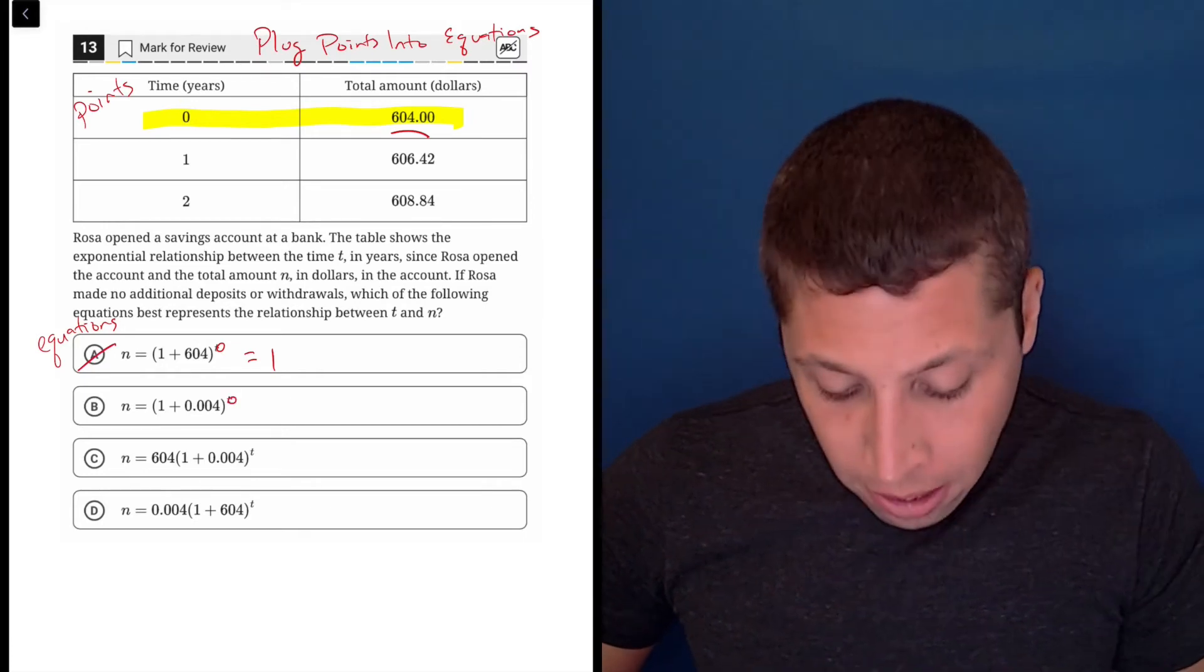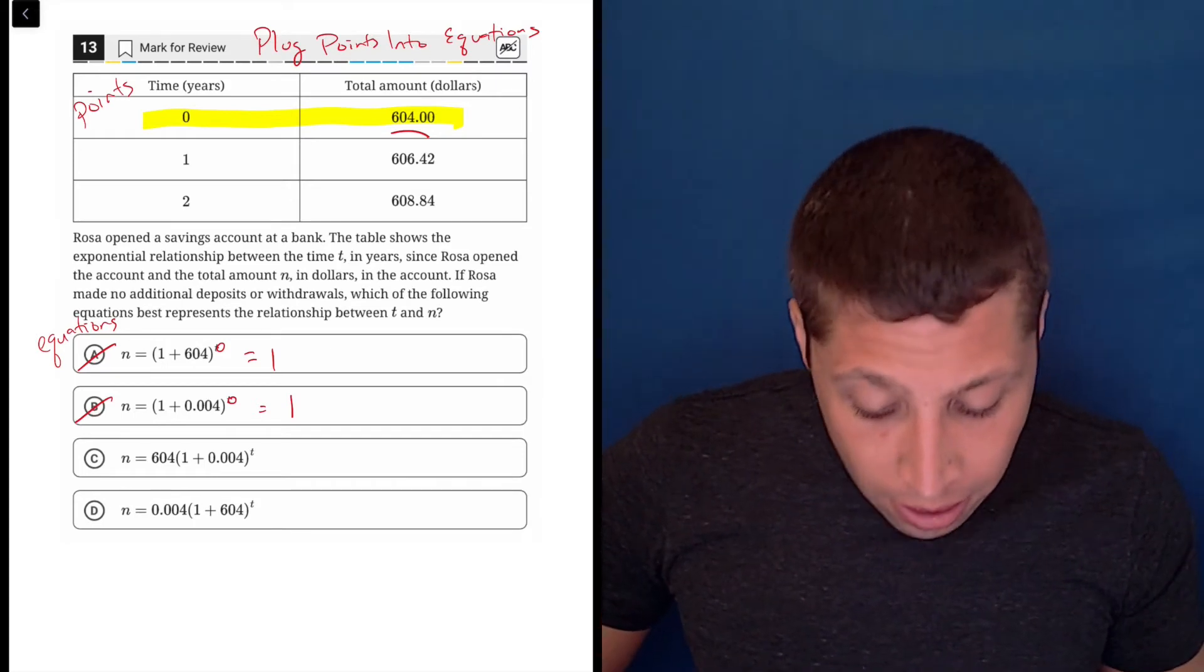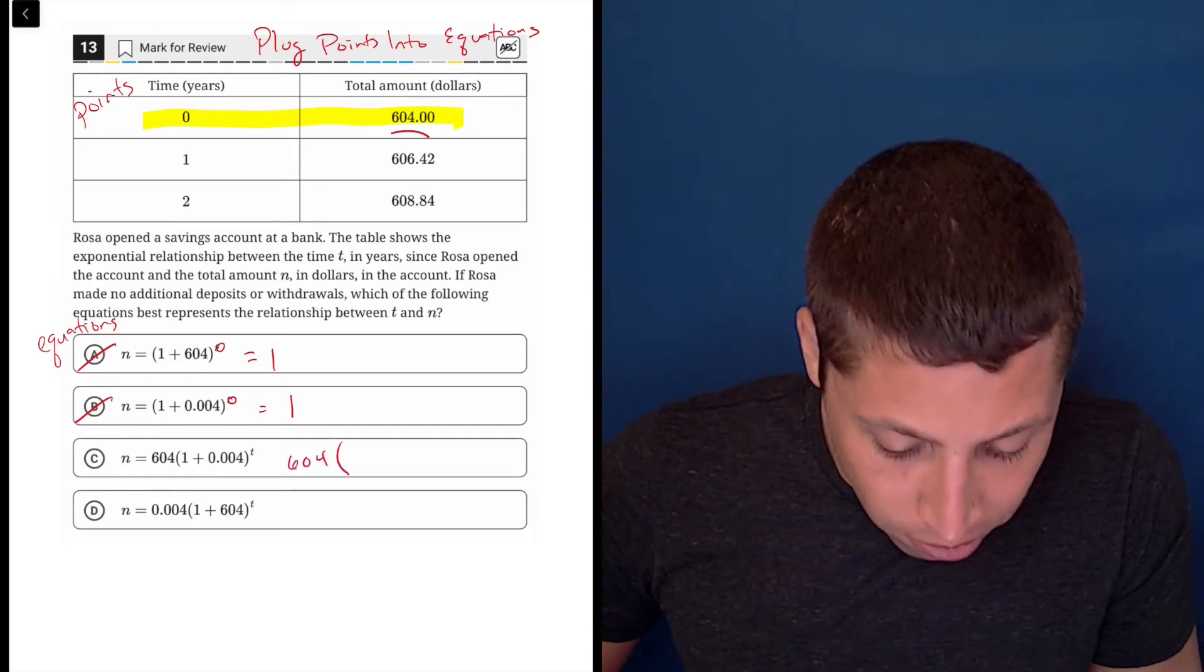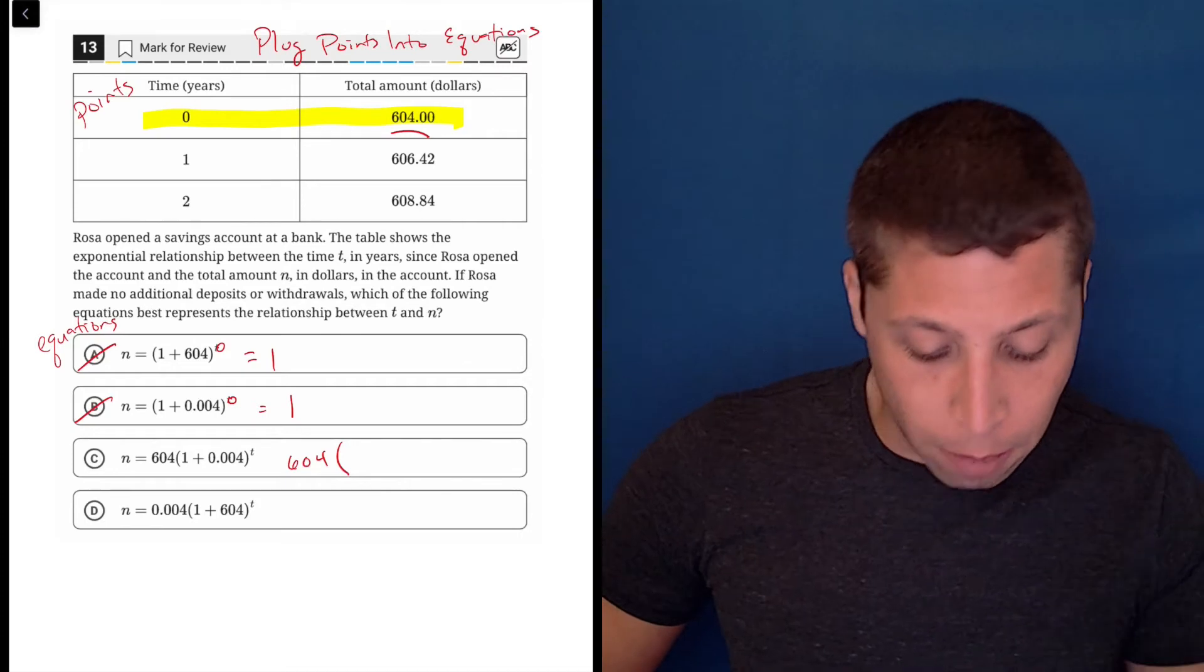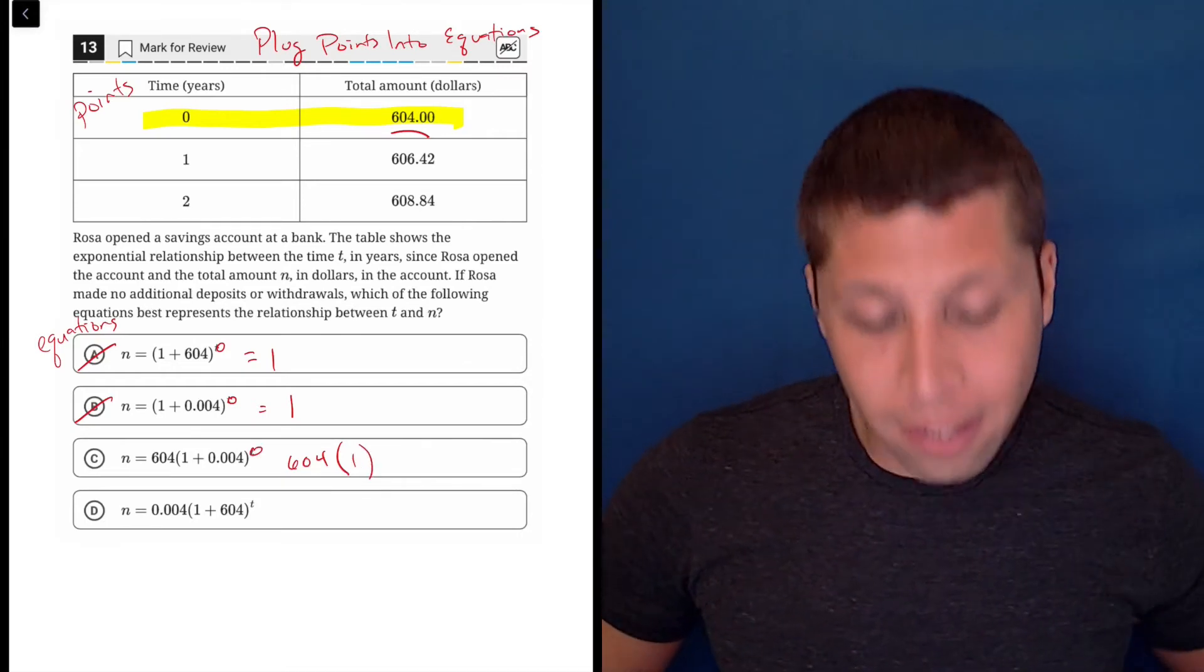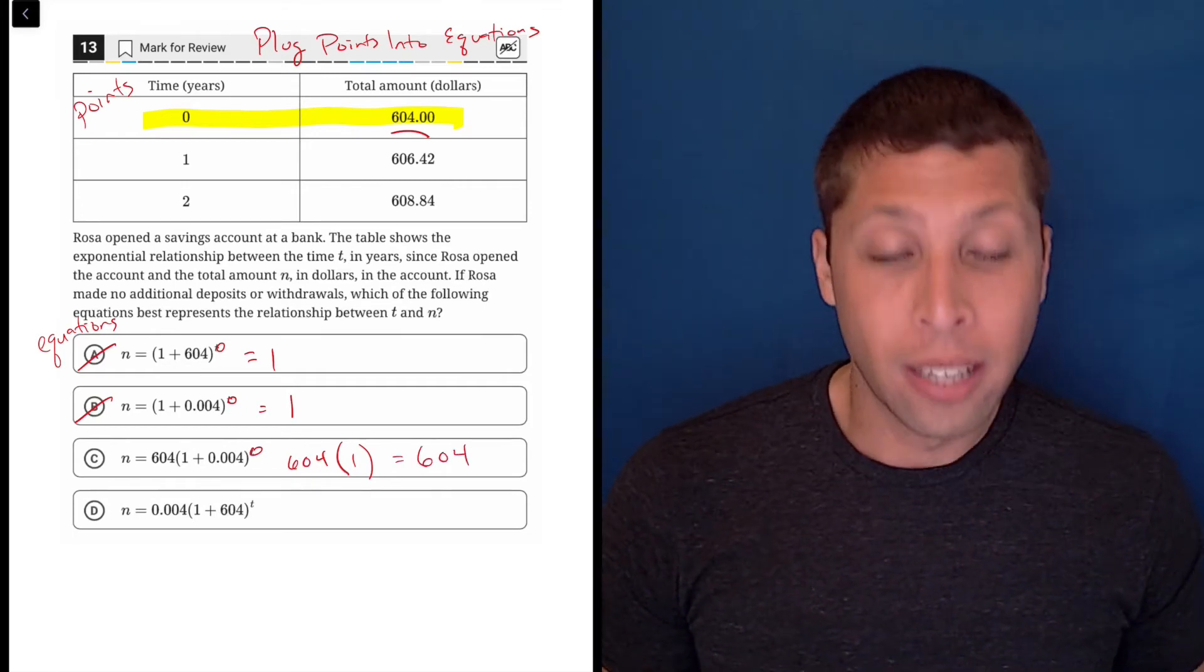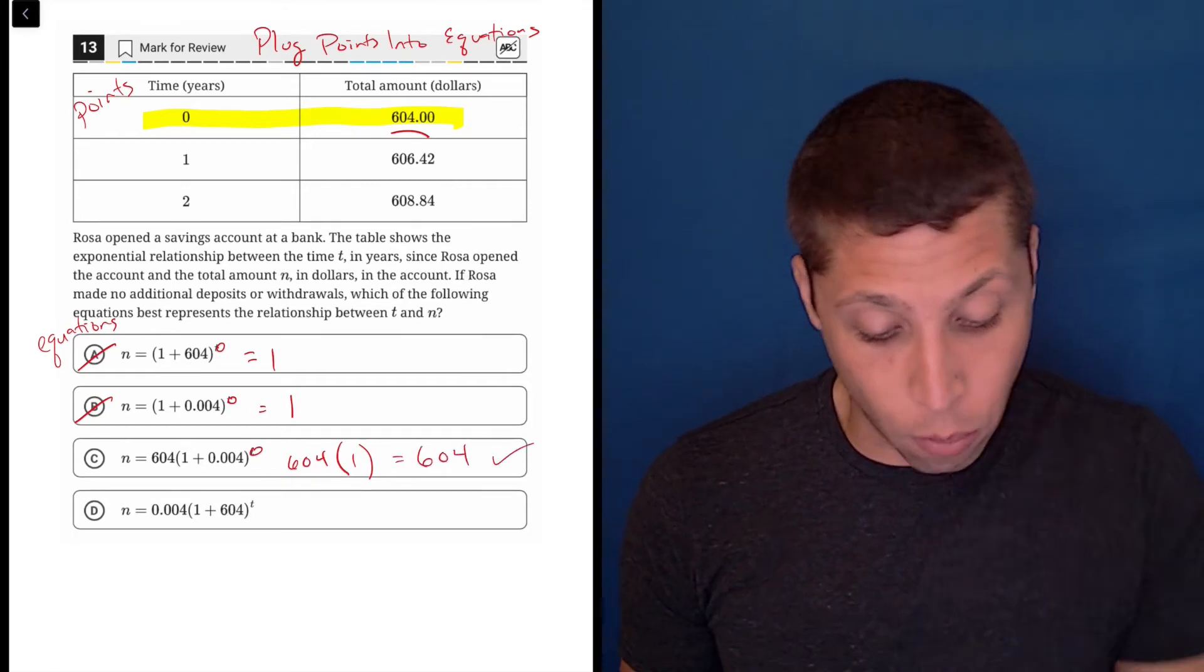If I do the same thing here, again, raised to the 0 is 1. Wrong. In choice C, right, 604 is on the outside, so we have something on the inside, but again, because it's going to be raised to the 0 power, the whole inside is going to become a 1. So that does work, right? 604 times 1 is 604, which is what I wanted.